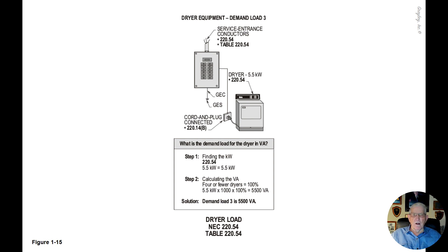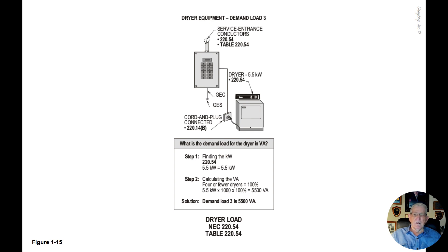This illustration deals with dryer loads in accordance with NEC 220.54 and Table 220.54. We're figuring the VA by applying a demand load for the service entrance conductors as well as for a feeder — not a branch circuit. We have one dryer, so with four or fewer dryers we take them at 100%. One dryer at 5.5 kW; also review cord-and-plug connection per 220.14(b) and grounding per 250.140.